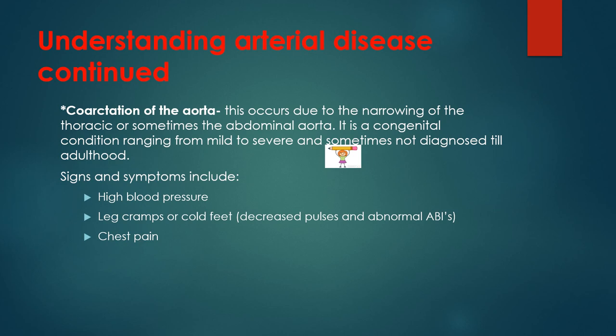Coarctation of the aorta occurs due to narrowing of the thoracic or sometimes the abdominal aorta. It is a congenital condition ranging from mild to severe, and sometimes not diagnosed until adulthood. Signs and symptoms include high blood pressure, leg cramps or cold feet, decreased pulses, abnormal ABIs, and chest pain.